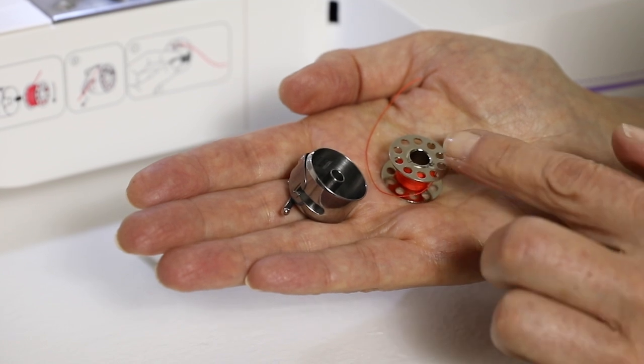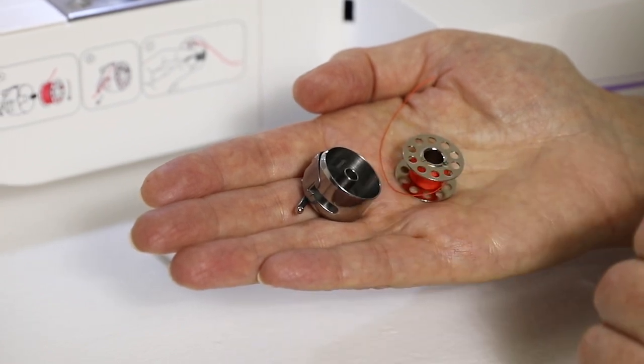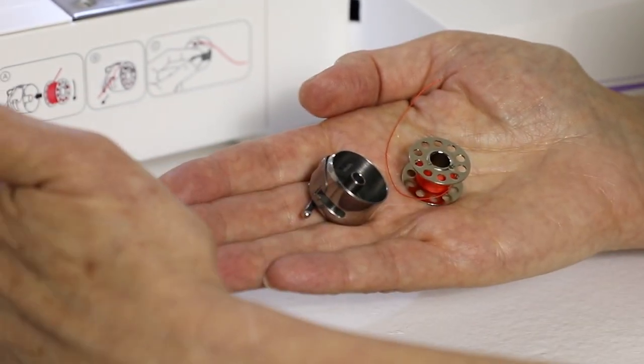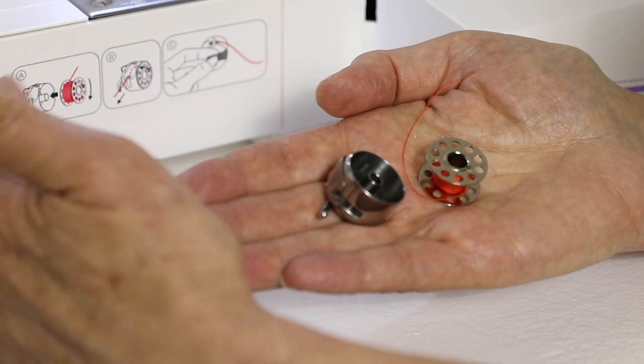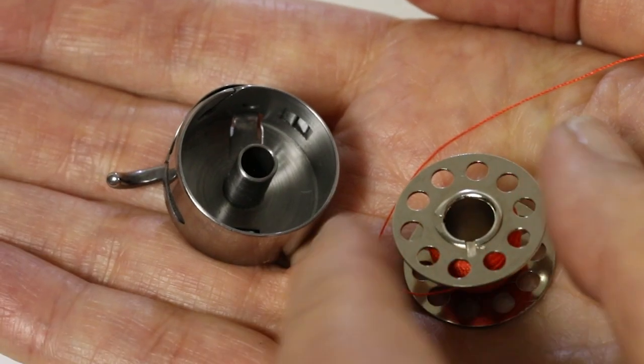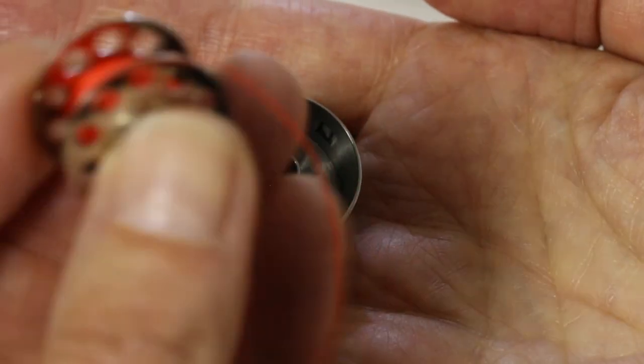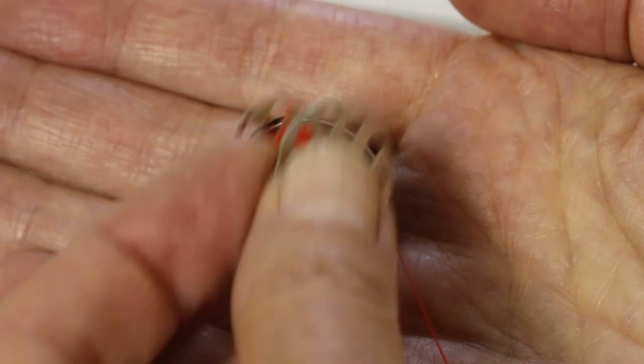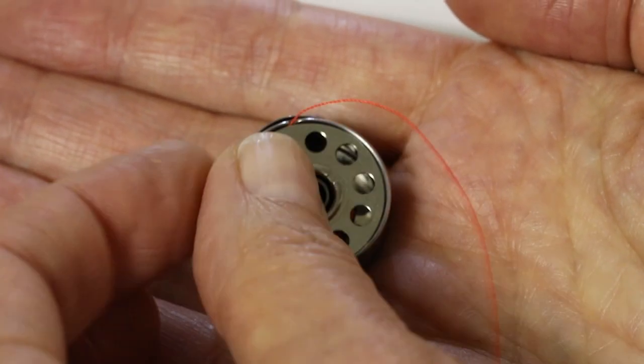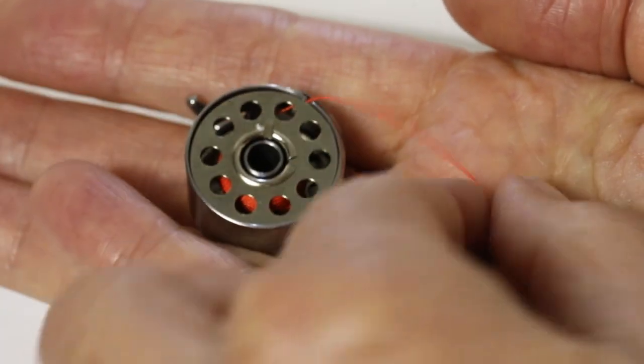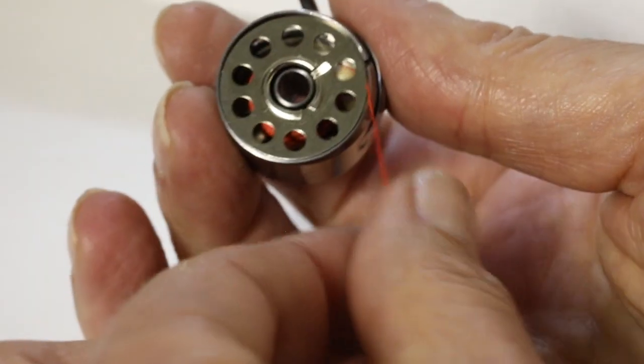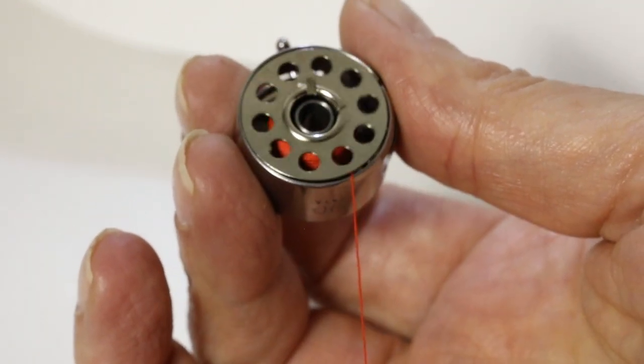The next thing we're going to do is place our bobbin in our bobbin case. As a quick reference you can check the diagrams here at the front of your machine. But let me show you how to do it. You place your bobbin in your bobbin case like so and when you pull the thread make sure the bobbin is turning clockwise.